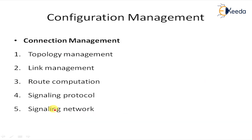Some of the connection management functions include: first, topology management. Each node in the network maintains a database of the network topology — the current set of available resources as well as resources used to support traffic. In the event of any changes in the network, this information is propagated to all network nodes.